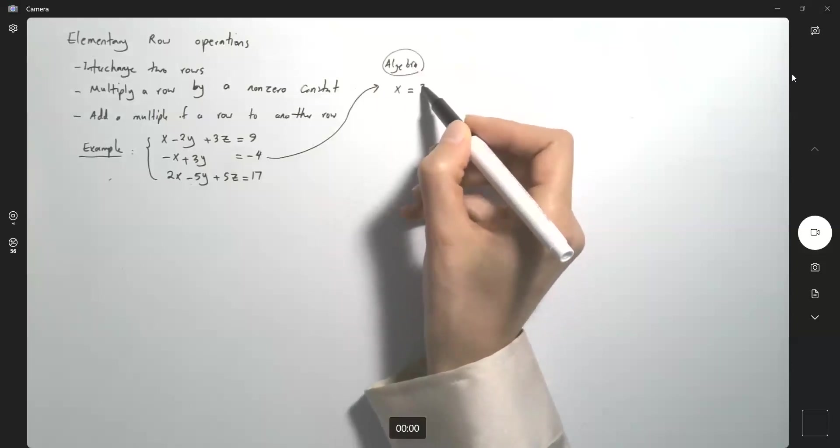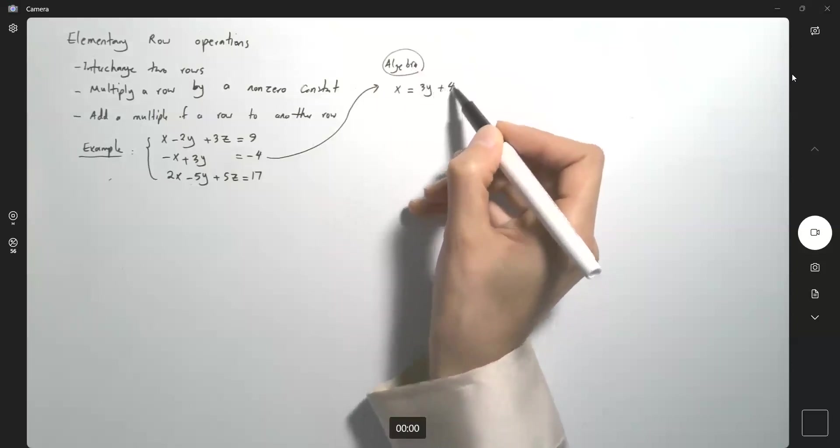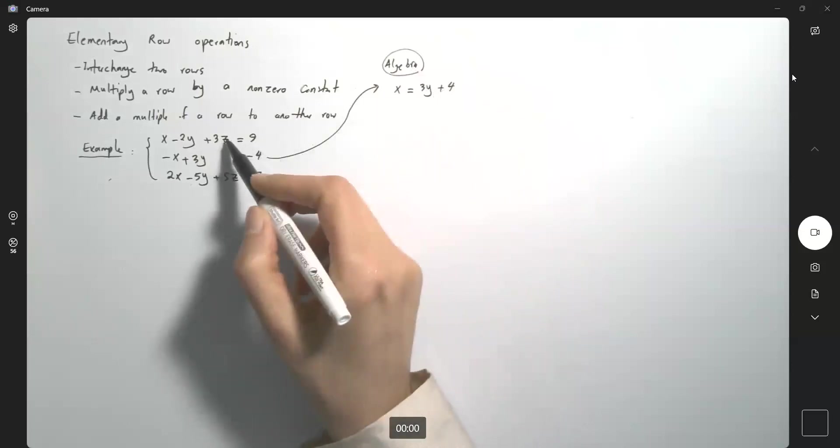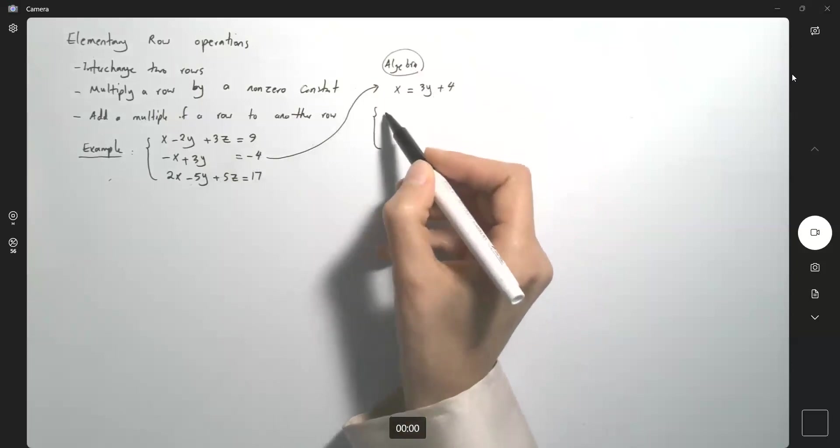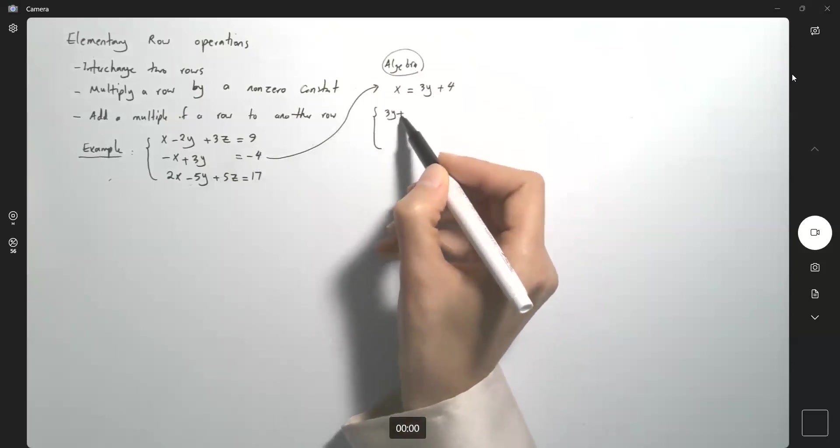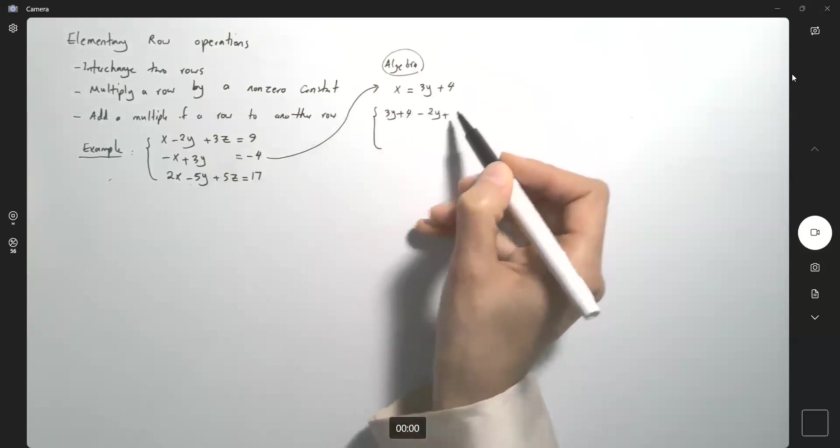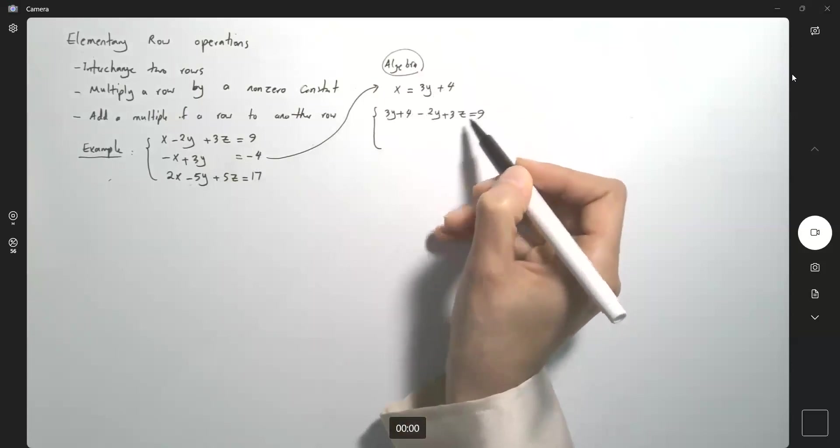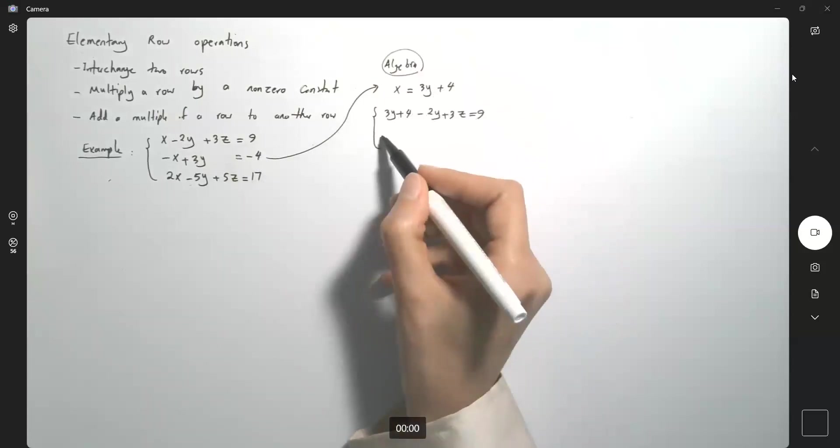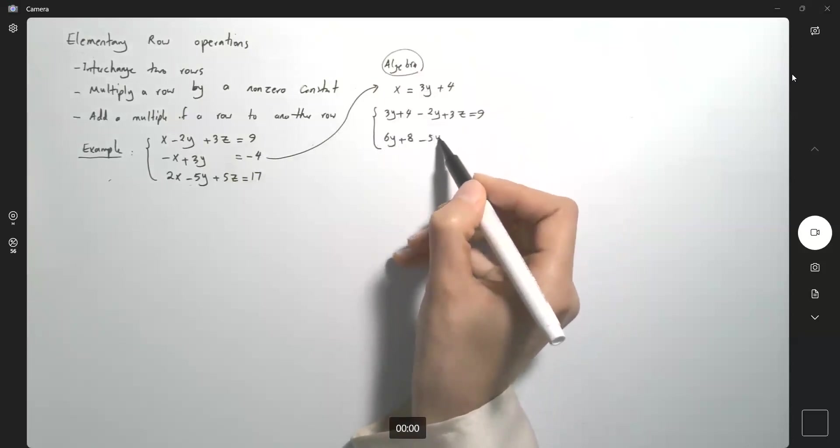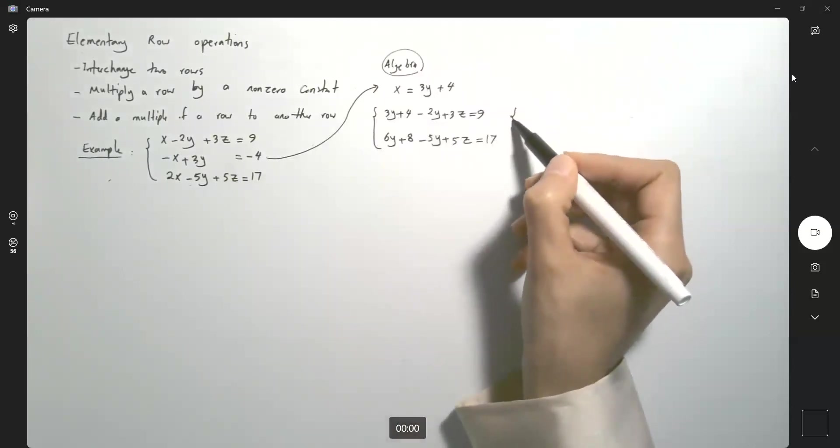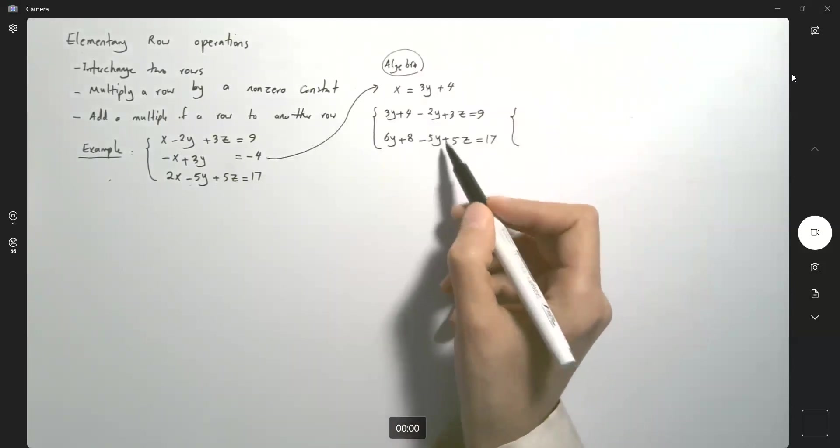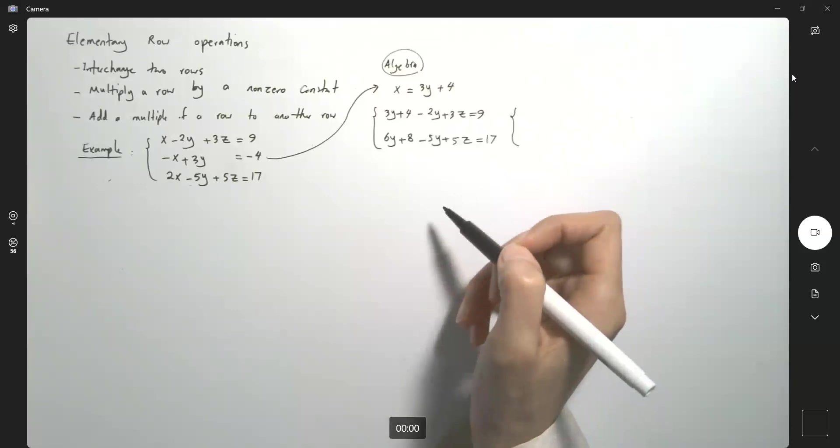x is equal to 3y plus 4 and you can substitute x into equation 1 and equation 3. So equation 1 becomes 3y plus 4 minus 2y plus 3z equals 9 and the last equation becomes 2 times 3 which is 6y plus 8 minus 5y plus 5z equals 17. So now we created a system of equations in two variables.